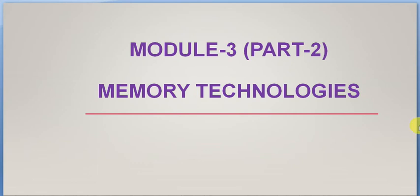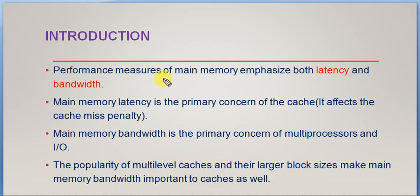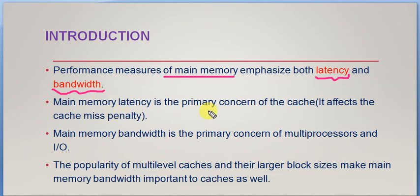In today's session we will discuss the hardware-related working of memory devices like primary memory and cache memory. The performance of main memory is mainly based on latency as well as bandwidth — two performance measures used for evaluating a memory system. Latency is the primary concern of the cache because it determines how long it will take to get a response or read the data.